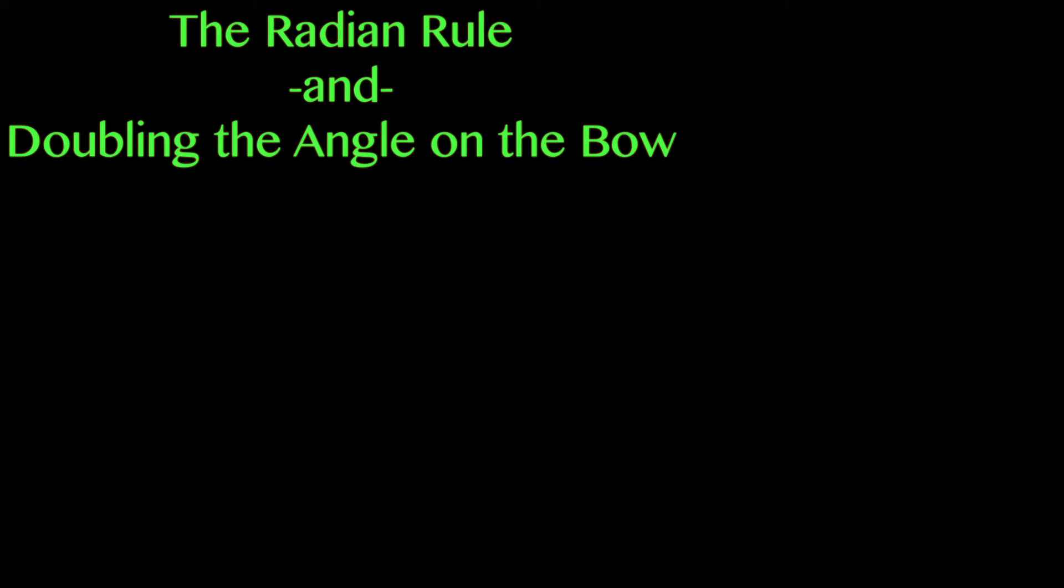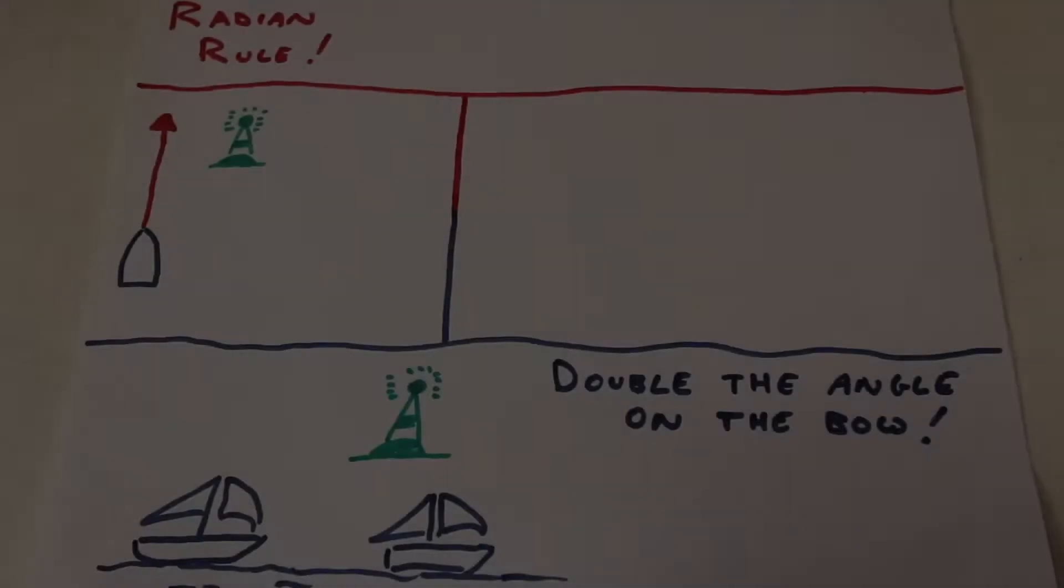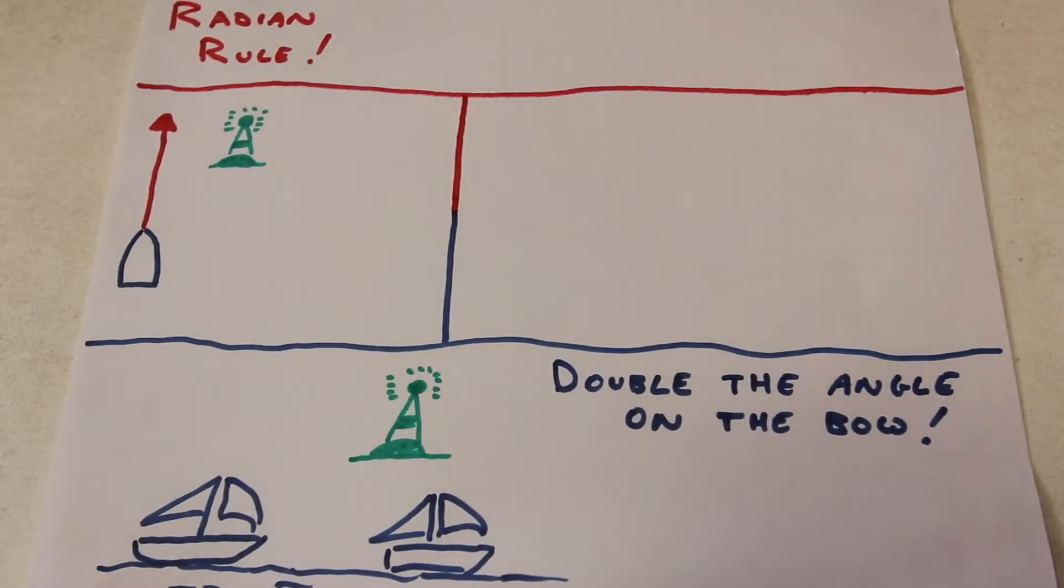The Radian Rule and doubling the angle on the bow are two techniques to help you determine how much you will clear an object by, or in other words, how close you will get at the closest point of approach.